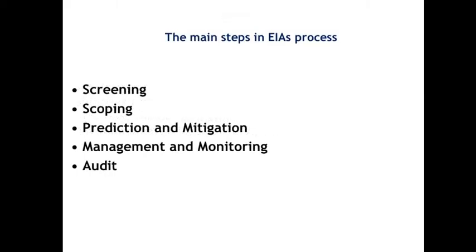The main steps in the EIA process are: screening, then scoping, then prediction and mitigation, then management and monitoring, and finally auditing. The first step is screening. Screening is the solution to the problem of deciding which project requires EIA. There are various types of projects based on requirements and EIA compulsion — screening determines which projects require EIA or not.